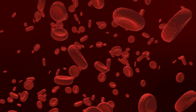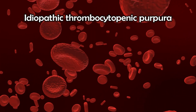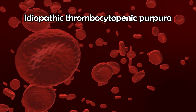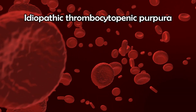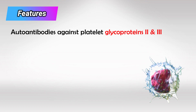Welcome back. In this video, we will talk about immune thrombocytopenic purpura. It is caused by autoantibodies against the platelets, specifically glycoprotein-2 and glycoprotein-3. This destroys the platelets, and patients sometimes have platelets as low as 100.